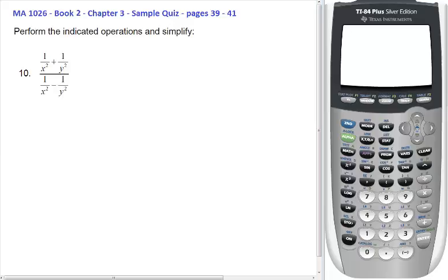It asks us to perform the indicated operation and simplify. As you can see, we have what's called a complex fraction because we have to add these two fractions on top and it's all over another set of fractions on the bottom, compound or complex fractions.